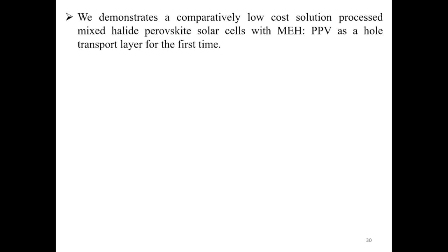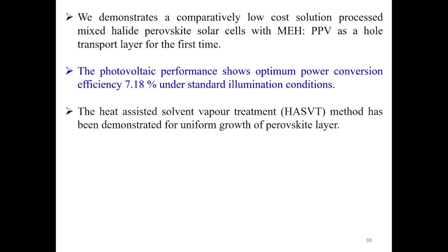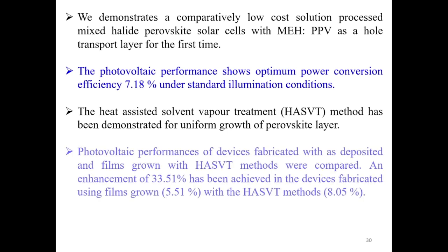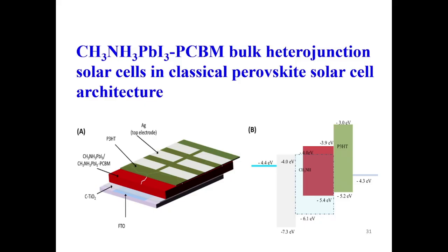This is also another work in a different device configuration. Here we have used single halide and PCBM bulk heterojunction solar cell in classical perovskite architecture. Here if you see, we have used another hole transport layer, and this is P3HT. This is PCBM and methylammonium lead iodide single halide.